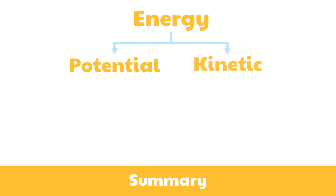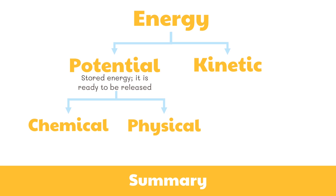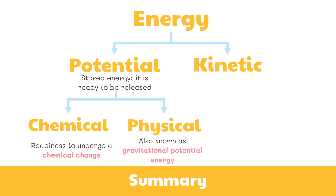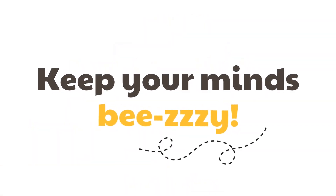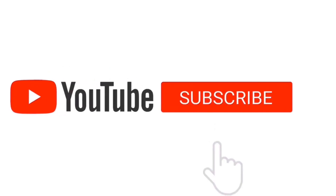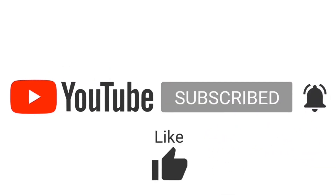To summarize, we learned about energy and its two forms: potential energy and kinetic energy. Potential energy is also known as stored energy — it is energy ready to be released. Potential energy has two forms: chemical and physical. Chemical potential energy has the readiness to undergo chemical change, while physical potential energy is also known as gravitational potential energy. To learn more about kinetic energy, please watch our next video. Don't forget to keep your minds busy, and please subscribe to our channel!